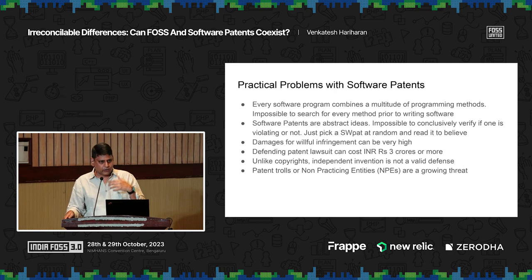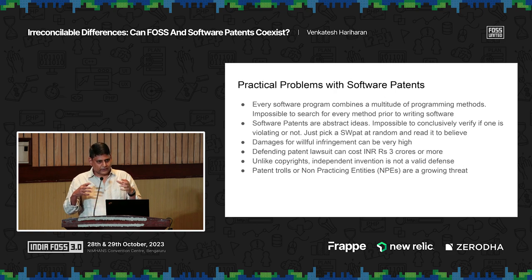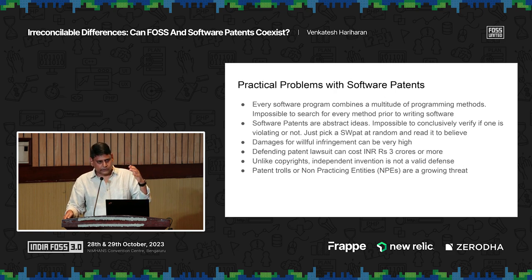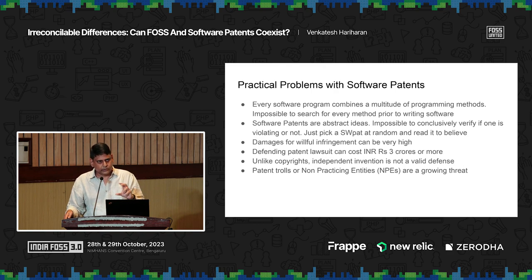If you read a software patent and later are found to have infringed on it, willful infringement damages are much higher. So it's a very weird setup where everything is meant to be exposing and opening up things, but you can't actually read it. If you look at the world today, it has moved from proprietary innovation to collaborative innovation. All the new technologies being built — AI, ML, machine learning, internet of things — it's all happening in the open source community. The open source model of collaboration, community, and shared ownership of knowledge is what is driving innovation at an exponential rate. So if there was any logic for allowing software patents, that's also kind of gone.